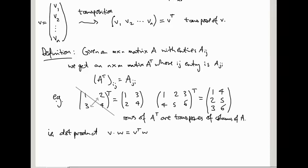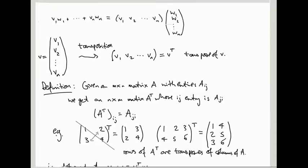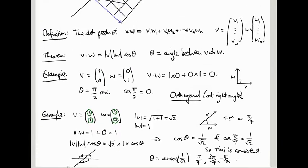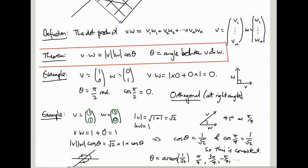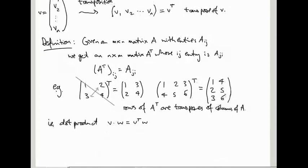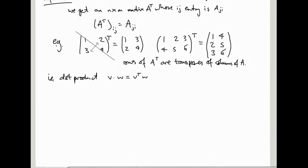Okay, so we're going to use this observation to prove this theorem, which you may have forgotten about by now. This is another main point of this session, is to prove this theorem, that V dot W is length of V times length of W times cos theta.